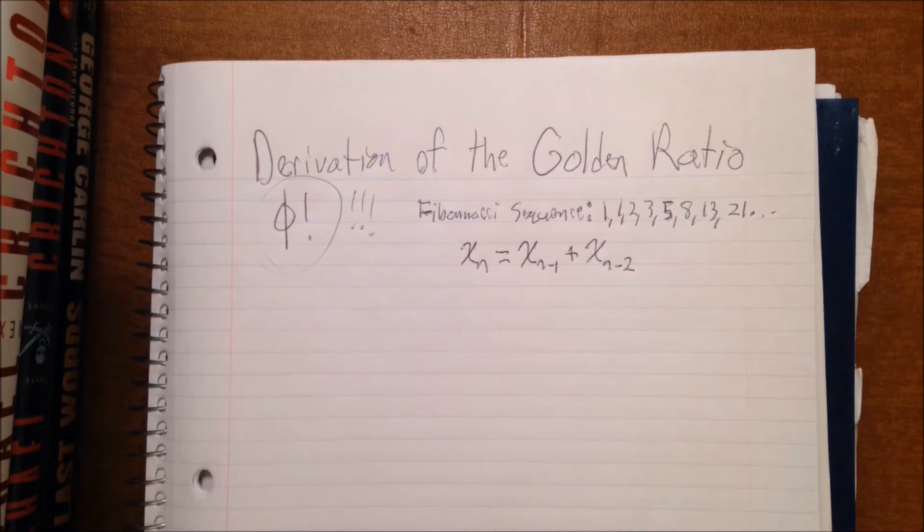Now if we carry out this process infinitely long and get to the last two numbers in the infinite sequence, we would get the exact value of phi. But obviously this is impossible—you can't get to the last number in an infinite sequence, that's not going to happen. But we can do some algebra to see what the value of phi is going to be.